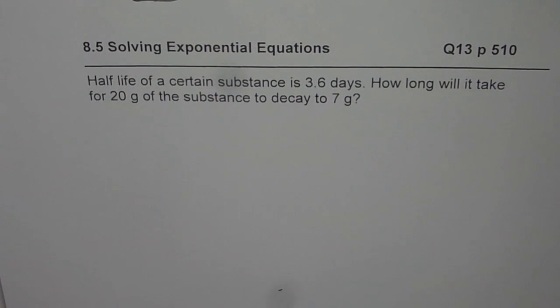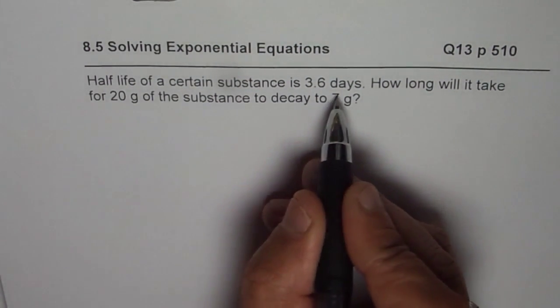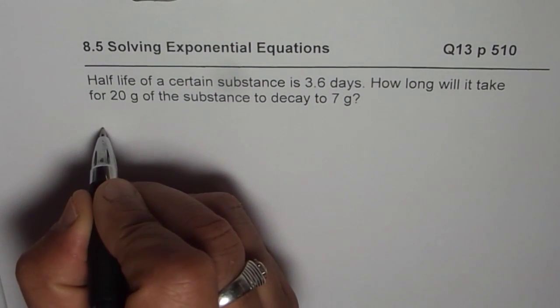The question is, half life of a certain substance is 3.6 days. How long will it take for 20 grams of the substance to decay to 7 grams? So the formula for half life is that the amount left,